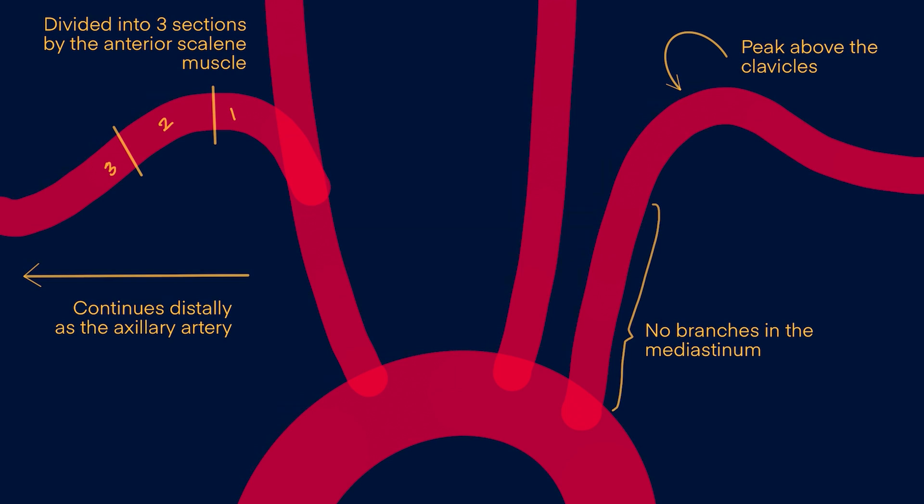As the subclavian artery continues lateral to the first rib, it becomes the axillary artery. The axillary artery has many additional branches, which we won't cover in this video.